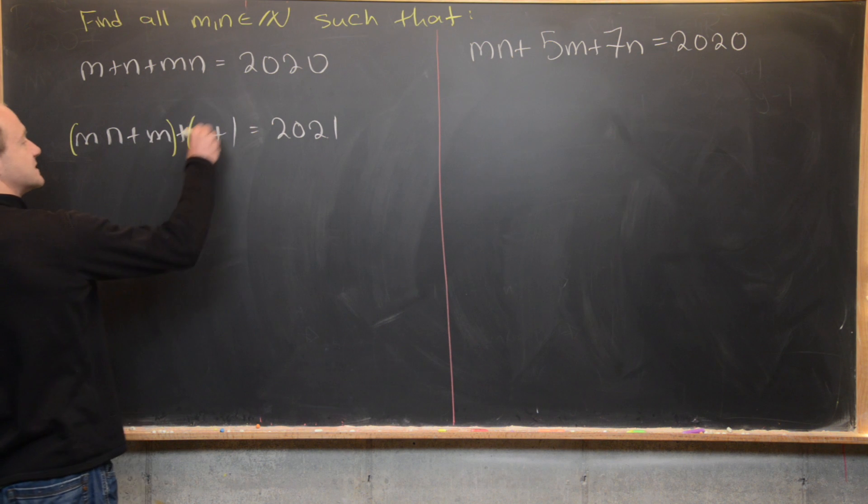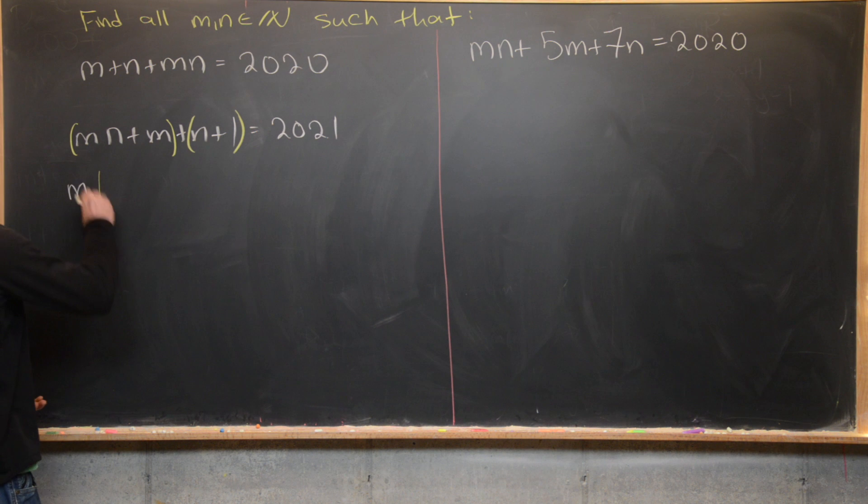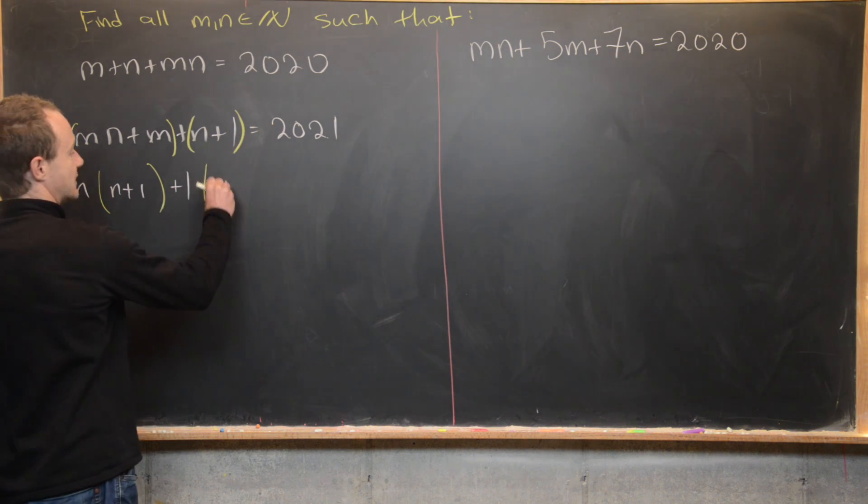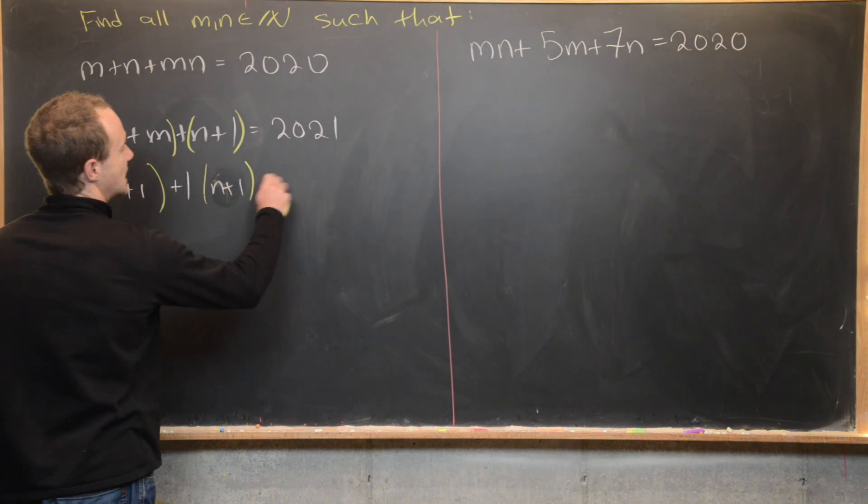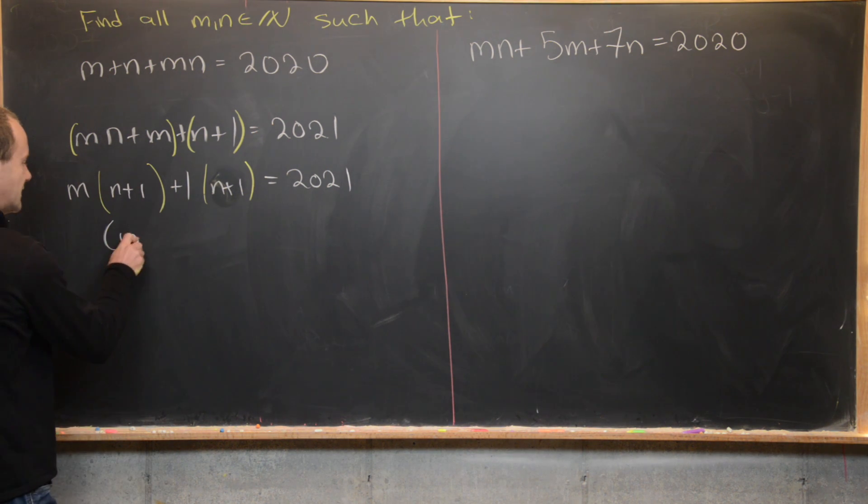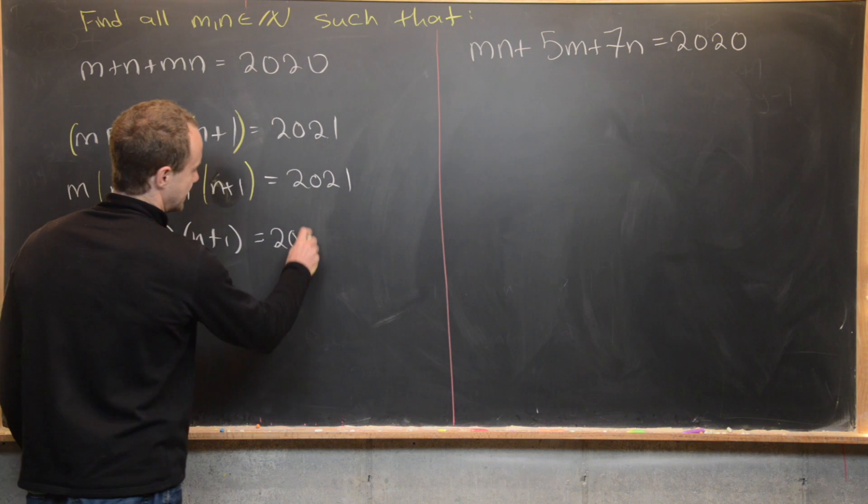But now notice that I can do some grouping here. I can group the first two terms and the last two terms. I can factor an m out of the first two terms and that's going to give me m times (n plus 1). I can factor a 1 out of the last two terms and that'll leave me with n plus 1 equals 2021. But now I can factor that just like m plus 1 times n plus 1 equals 2021.